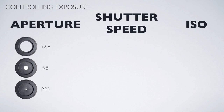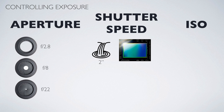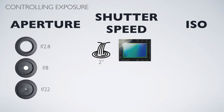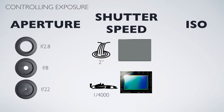Shutter speed is how long your sensor is exposed to light. Your sensor absorbs the light to actually take your picture - it's covered most of the time by a shutter curtain. If you're taking a picture of a waterfall and you set your shutter speed for two seconds, the shutter will open, expose for two seconds, then completely close. If you have a very high shutter speed like one four-thousandth of a second, the shutter opens and closes really quick and you capture just a little bit of light.